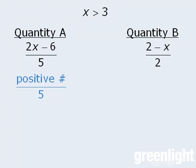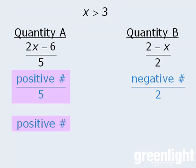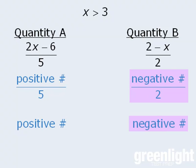Now let's move over to the numerator in quantity B. Here we can see that if x is greater than 3, then 2 minus x must be equal to some negative value. From here we can see that in quantity A, we have a positive number divided by 5, which will always be positive. And in quantity B, we have a negative number divided by a positive number, which will always be negative.